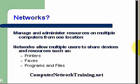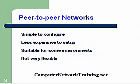Types of networks: peer-to-peer and client-server. A peer-to-peer network would not have a server, yet the computers can communicate with each other and share resources. A client-server network gives us access and controls access to all the different resources. Peer-to-peer networks are simple to configure and less expensive to set up — all we need is a couple of computers and a hub or a switch. However, it's not very flexible; we can't really share a lot of resources across it, we can't control access, so there's no security.